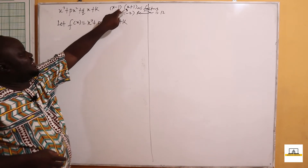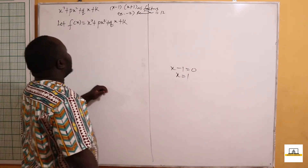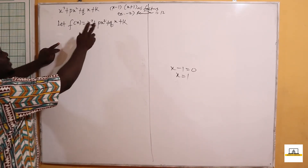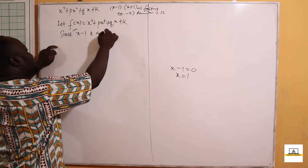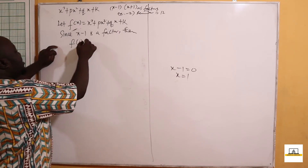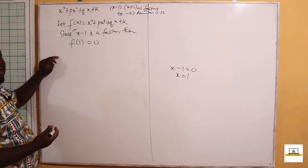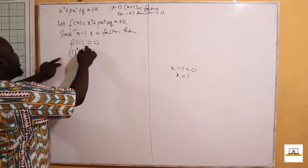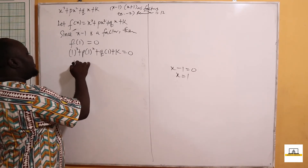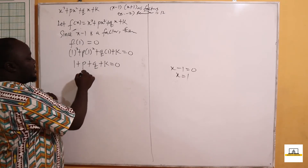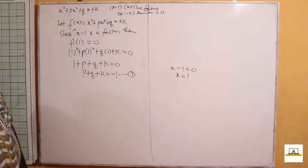If x minus 1 equals zero, then x equals 1. So f(1) will give a remainder of zero. Since x minus 1 is a factor, f(1) should give us zero. Substituting x = 1: 1 cubed plus p times 1 squared plus q times 1 plus k equals zero, giving us 1 + p + q + k = 0, so p + q + k = -1. We call this Equation 1.